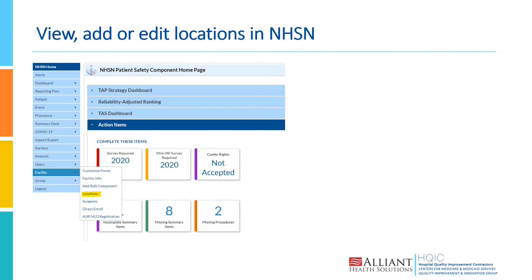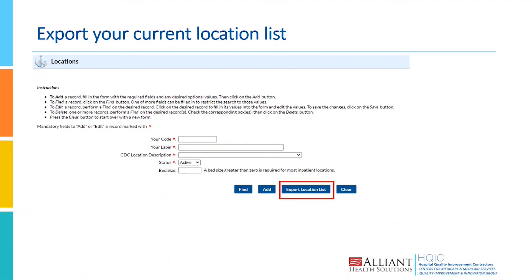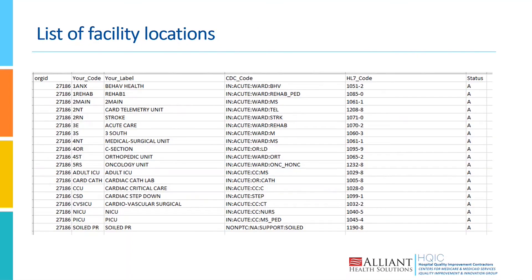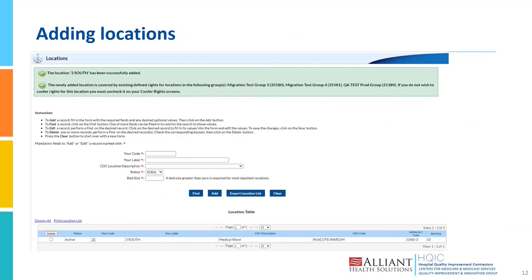To verify, edit, or add locations in NHSN, log into the NHSN application and select Facility from the left-hand side table of contents, then select Locations. You can export your current list of locations by selecting Export Location List at the bottom of your screen, or select Find to get a list of locations in NHSN. The exported list comes out as an Excel table. To add locations, enter your code — the abbreviation you call that unit — your label, which is the full name of the unit, and then the CDC location description, where you'll select whether it's a medical ward, surgical ward, or intensive care unit, for example.